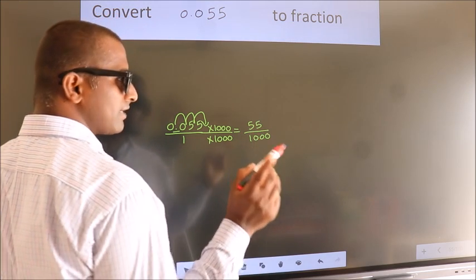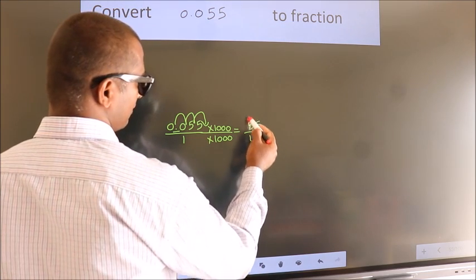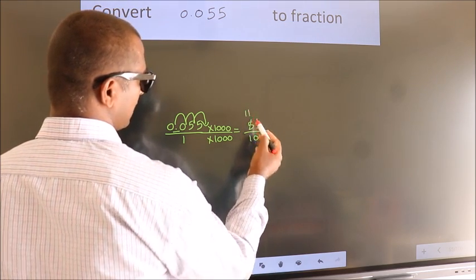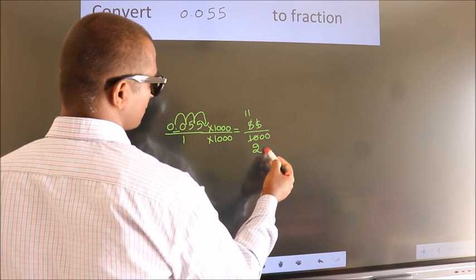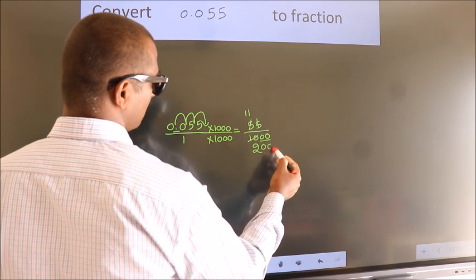I now cancel with 5. 5 1s, 5 2s, these 0s as it is down.